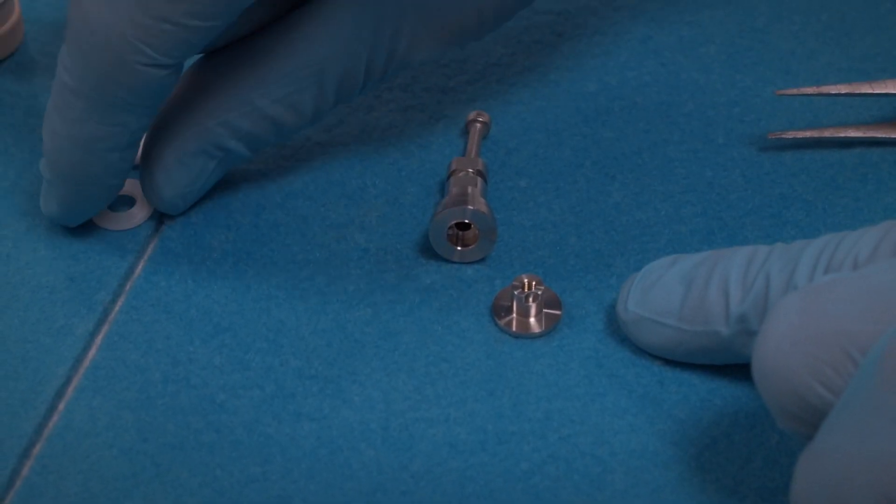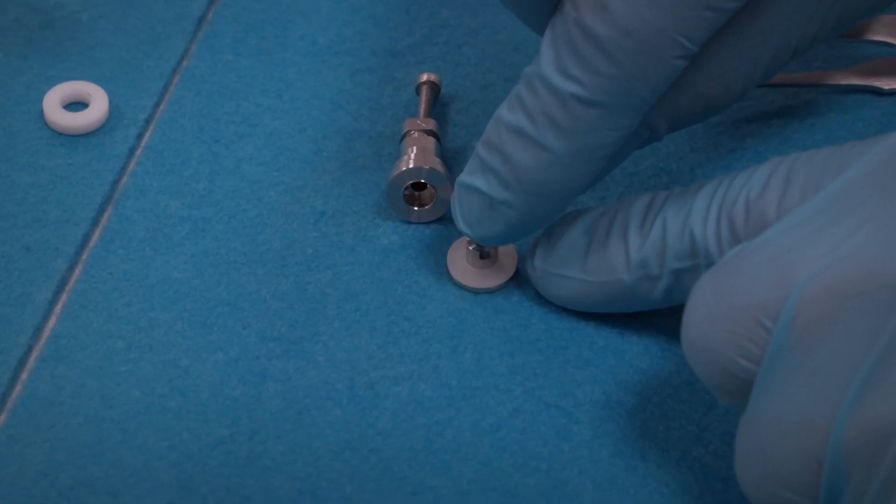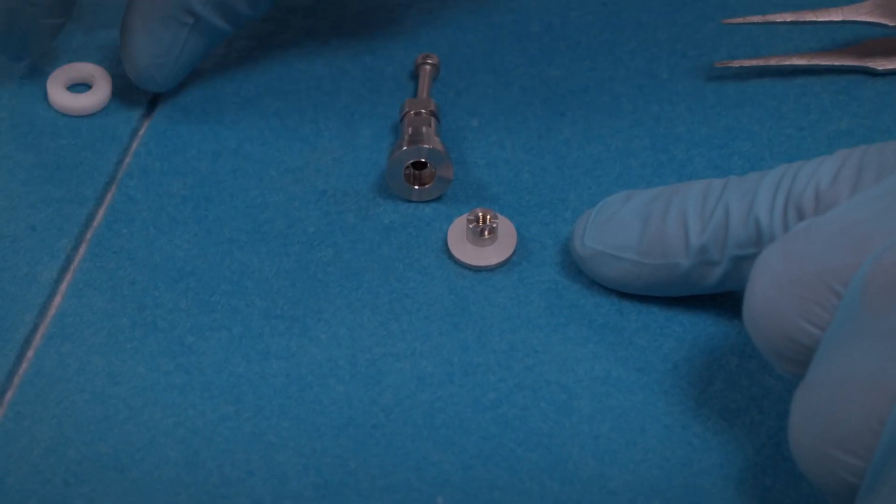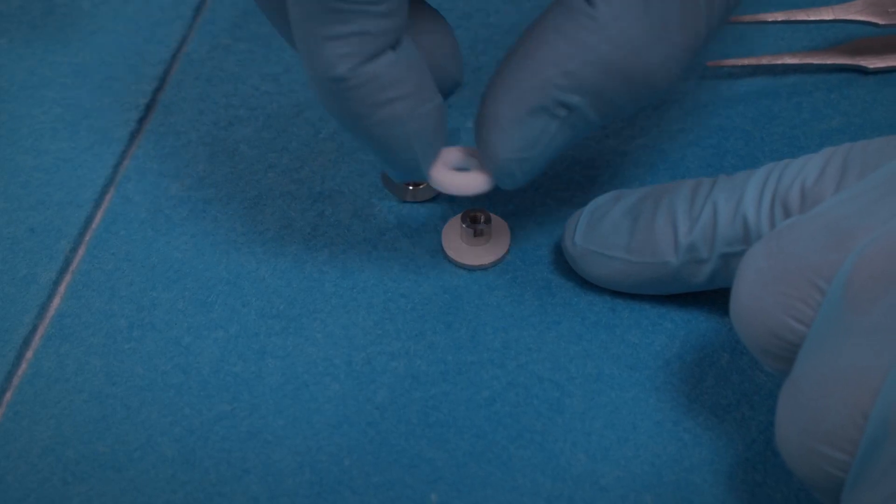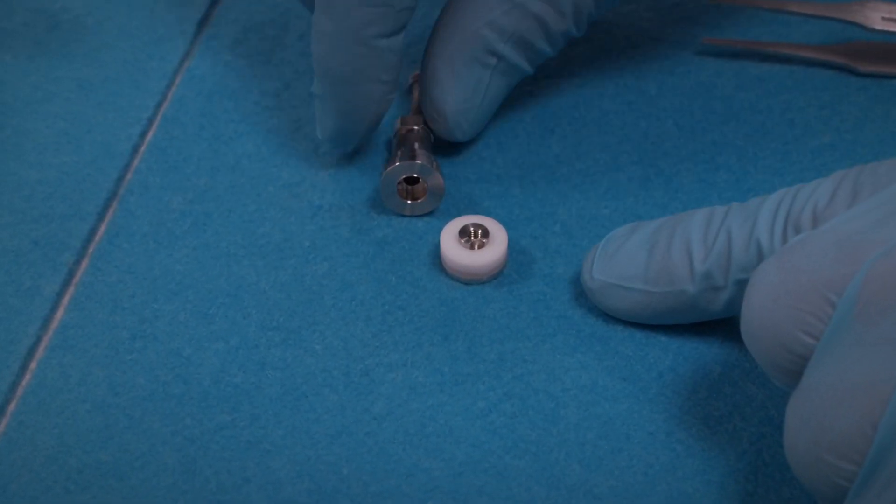The two sealing rings are curved and they have to be placed so that the curvature is pointing up. First the polyethylene seal, then the PTFE seal with the same orientation.